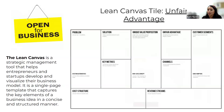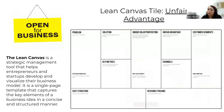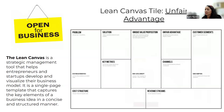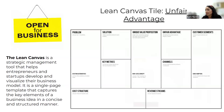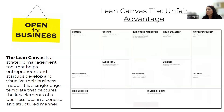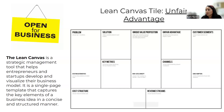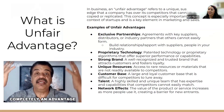We wanted to find the unfair advantage. The Lean Canvas is a strategic management tool that helps entrepreneurs and startups develop and visualize their business model into a single-page template that captures the key elements of a business. Today we're only focusing on the unfair advantage.